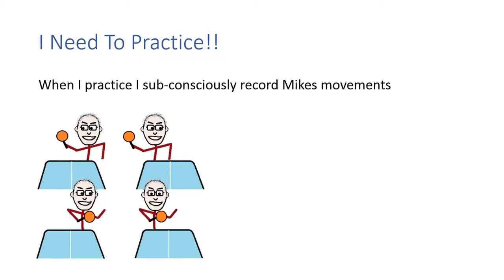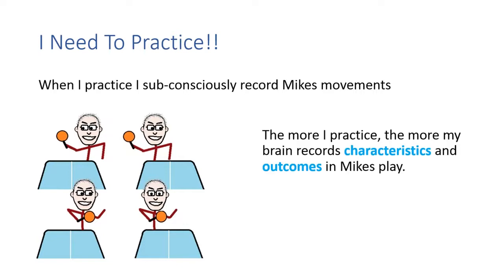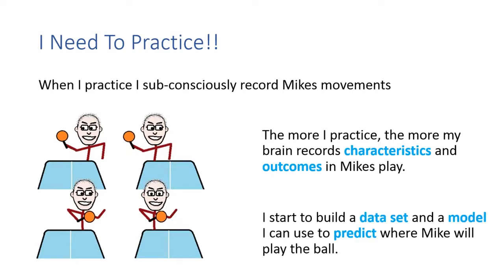I'm going to practice. Now when I practice, I subconsciously record Mike's movements. So every time he plays a shot against me, I'm recording that data. The more I practice, the more my brain records these characteristics and the outcomes in Mike's play. And I start to build a data set and a model that I can use to predict where Mike will play the ball.